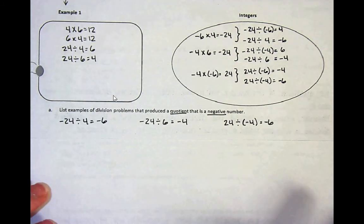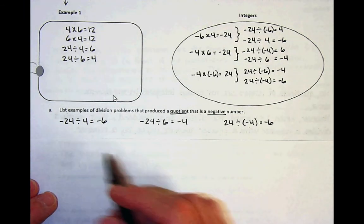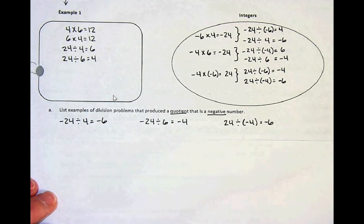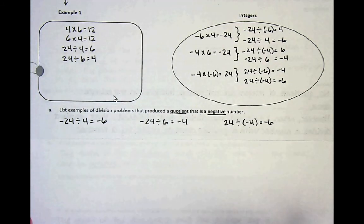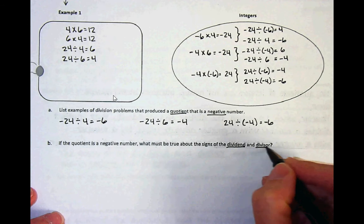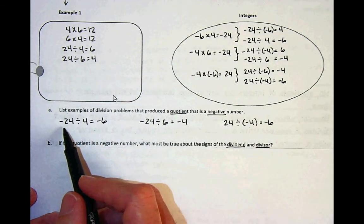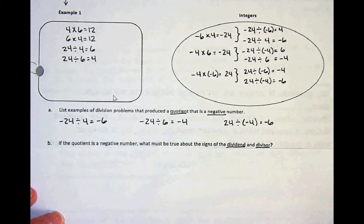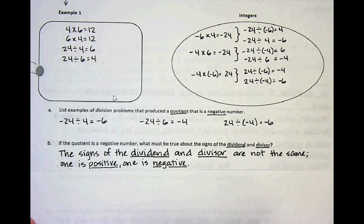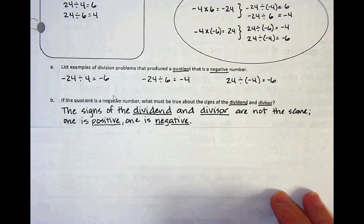Here is what you should have — it would apply to your particular problem. Whatever one of these six has a negative quotient, that's what you want to write down here. For our second question: if the quotient is a negative number, what must be true about the signs of the dividend and the divisor? One of them has to be negative and the other one has to be positive. The signs of the dividend and divisor are not the same — one is positive and one is negative. Take some time to write that down.